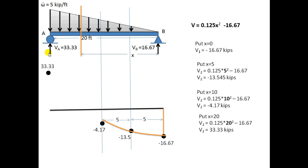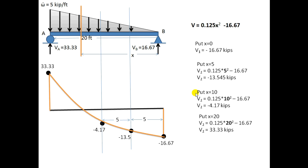The shear value at X = 20 is +33. This is the shear force diagram for the UVL acting over the beam. By substituting different values of X into the equation, you can plot the complete shear force diagram.